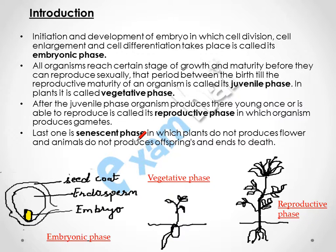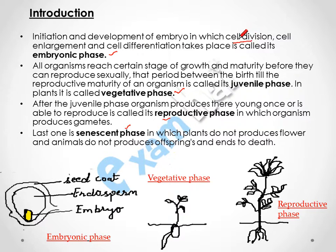Similarly, plants also have different phases in their life cycle: first the embryonic phase, after that the vegetative phase, then the reproductive phase, and the last one is the senescence phase. During the embryonic phase, the cell divides, the cell enlarges, increases in size, and differentiates — meaning the cell is converted into a specialized cell that will form a specialized tissue.